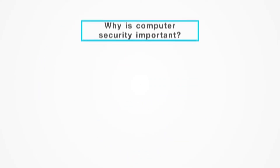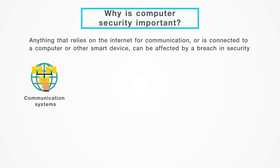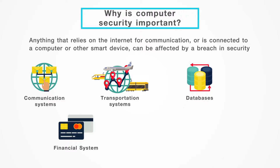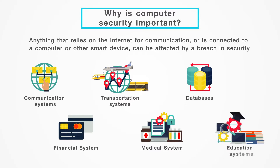Why is computer security important? Anything that relies on the internet for communication or is connected to a computer or other smart device can be affected by a breach in security. This includes communication systems like email, phone, and text message; transportation systems including traffic control, car engines, and airplane navigation systems; government databases including social security numbers, licenses, and tax records; financial systems including bank accounts, loans, and paychecks; medical systems including equipment and medical records; and educational systems including grades, report cards, and research information.